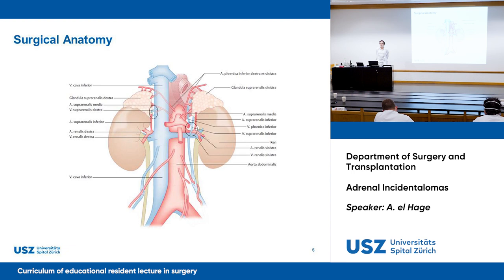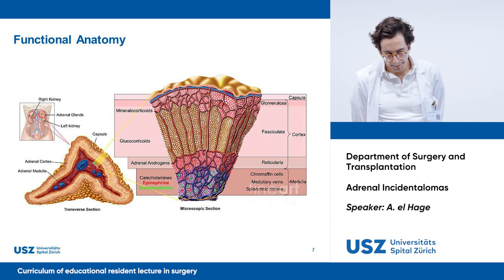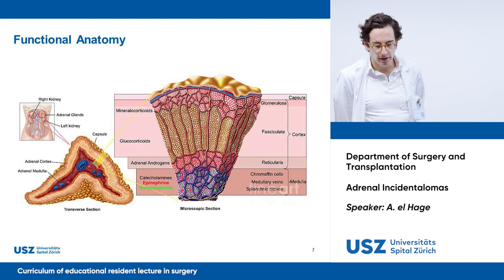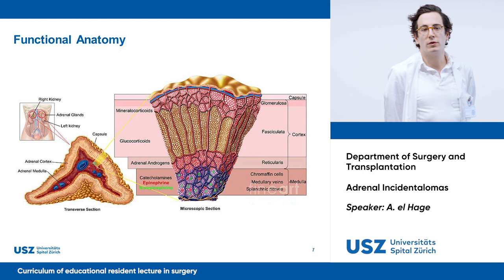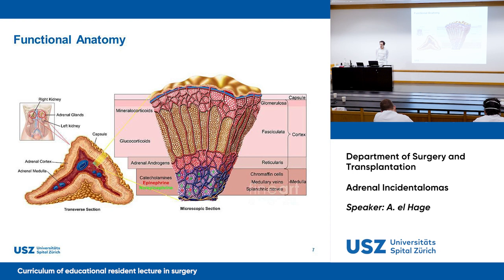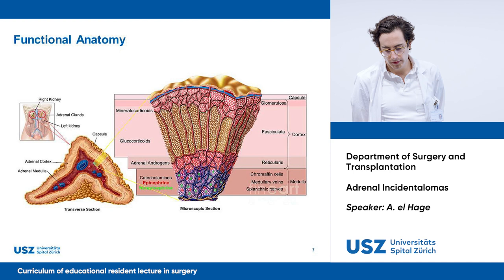Adrenal glands are divided into two parts: the cortex and the medulla. The cortex itself is divided into three zones: the zona glomerulosa, responsible for mineralocorticoids; the zona fasciculata, producing glucocorticoids; and the reticularis for adrenal androgens. The medulla has a different embryonic origin and is responsible for the production of catecholamines — epinephrine and norepinephrine.